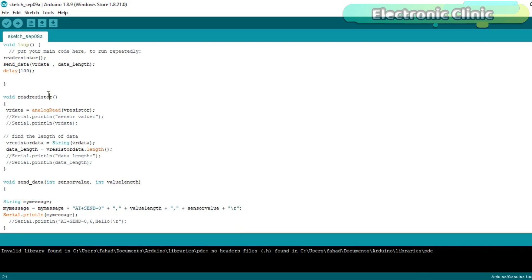Read resistor is a user defined function. It has no return type and it does not take any arguments as the input. The main purpose of this function is to read the variable resistor and store the value in variable VR data and convert this value into a string value. Using the length function we find the length of the string and store the number in data underscore length variable.